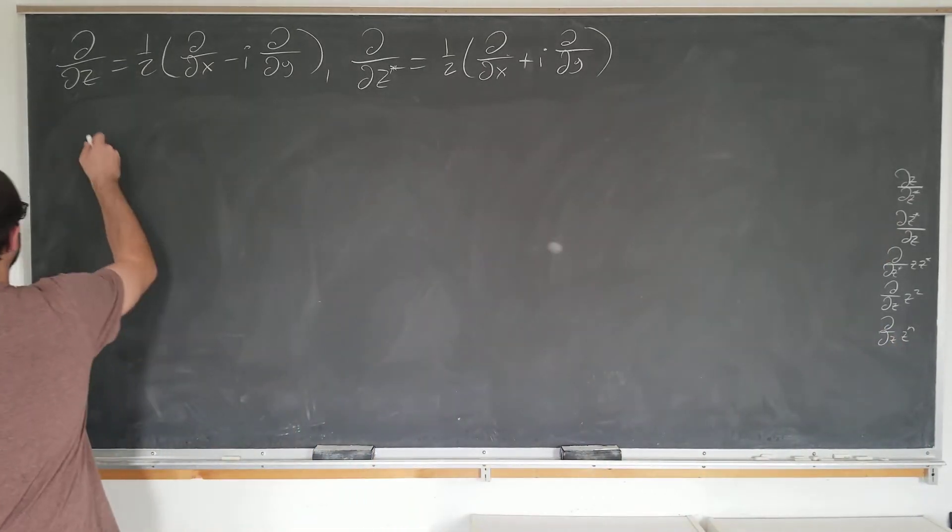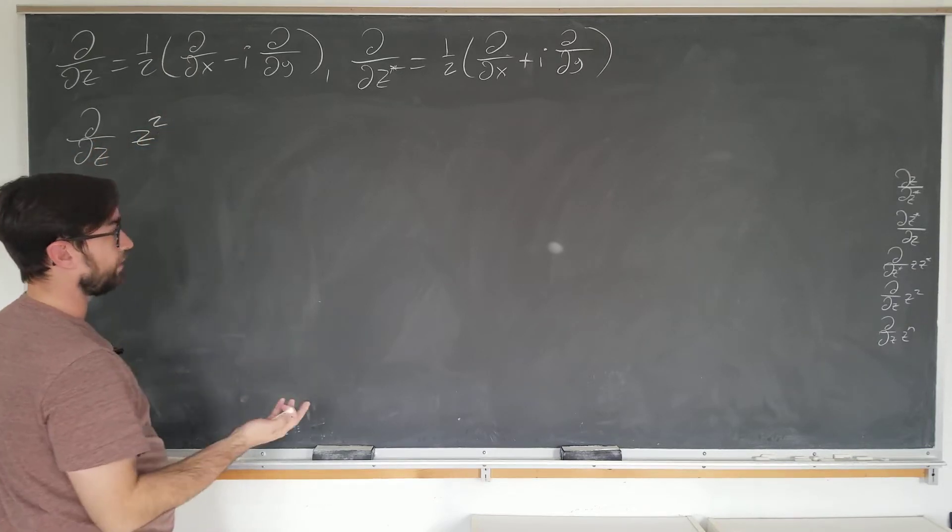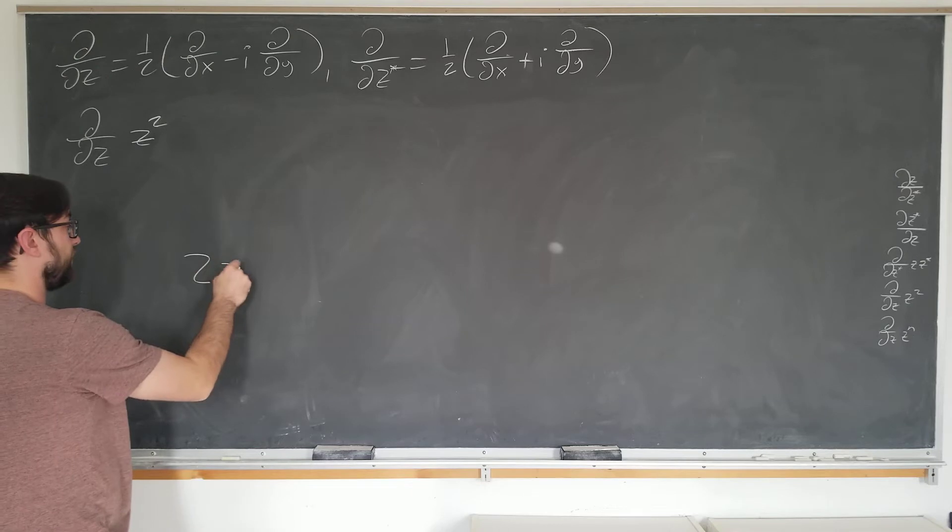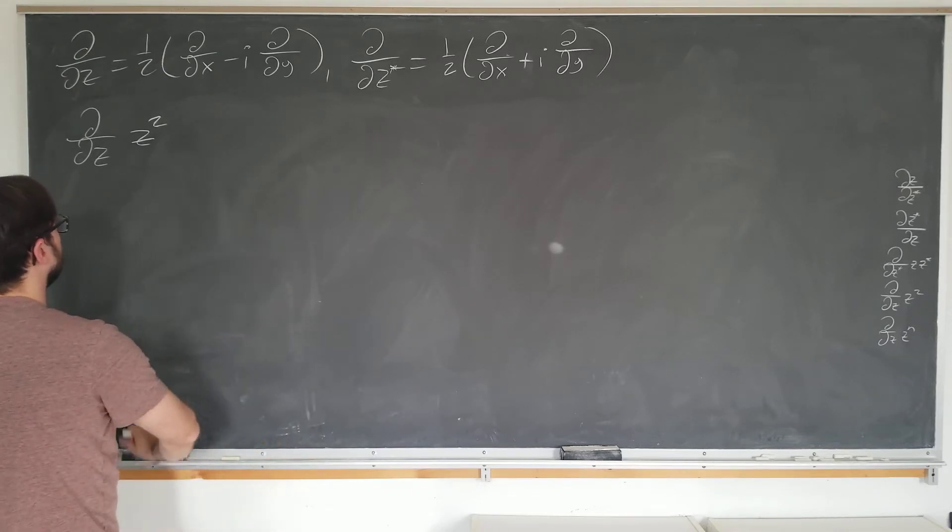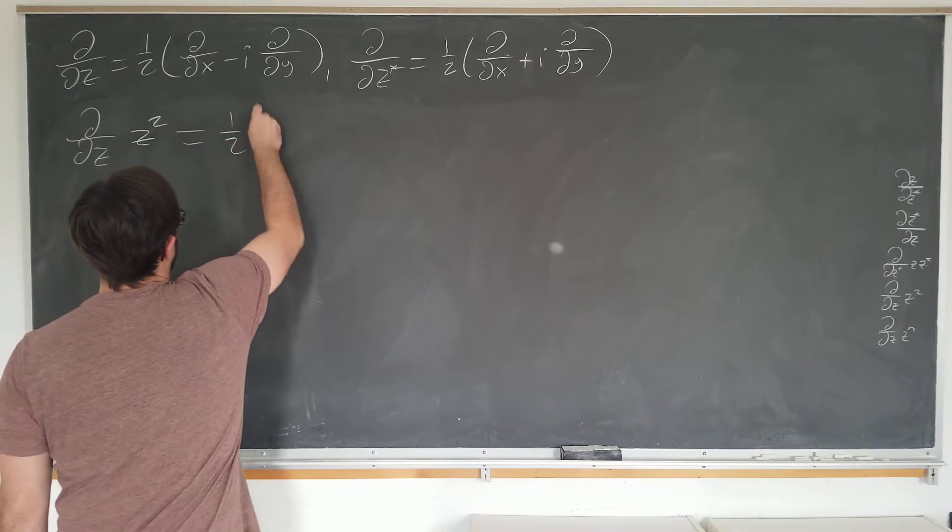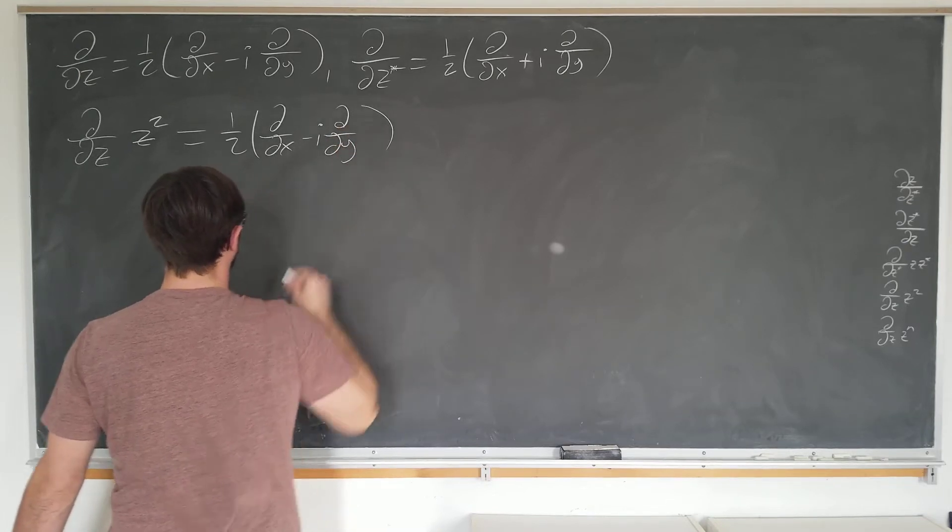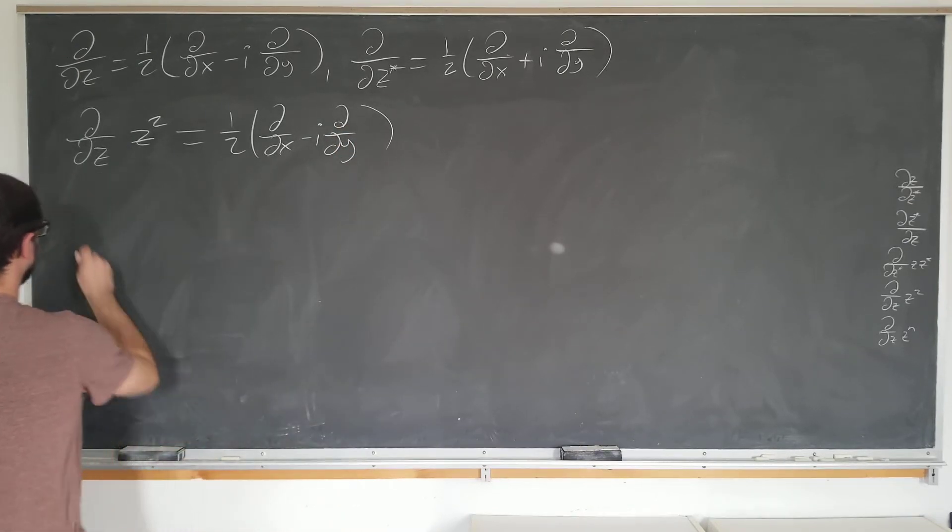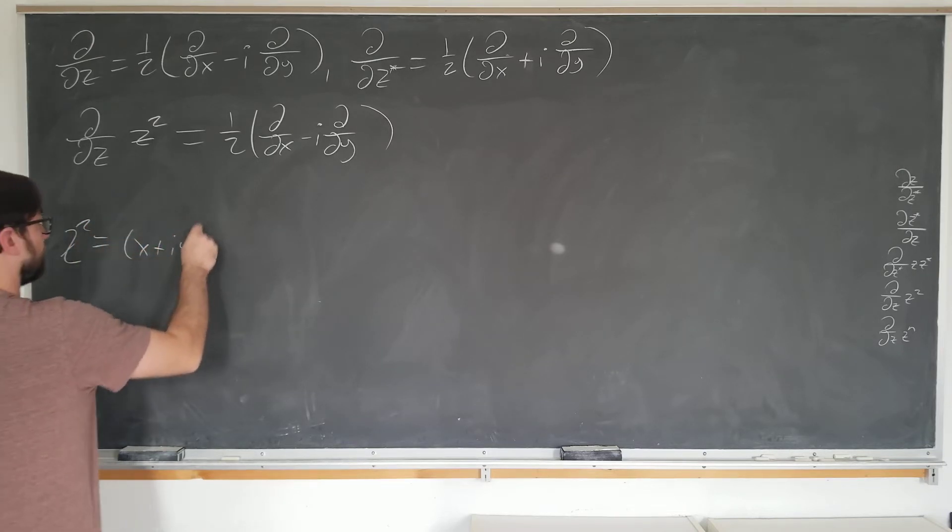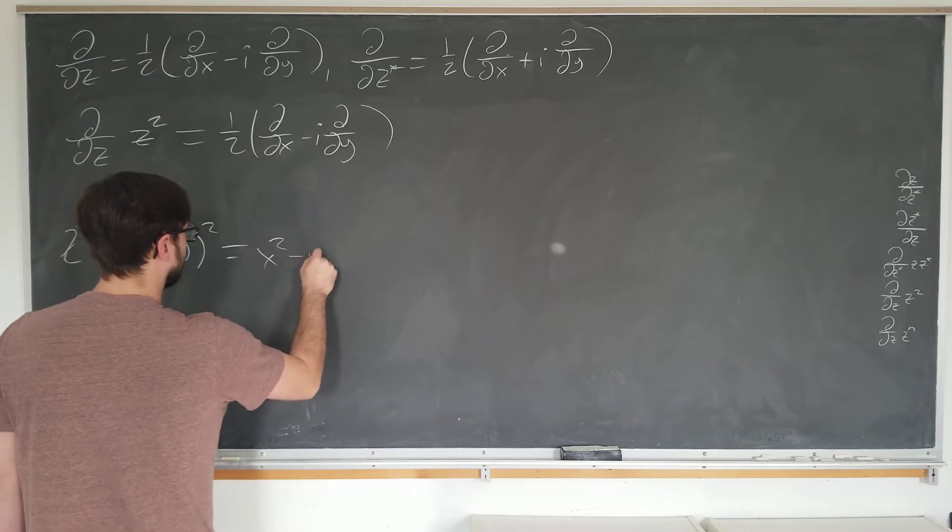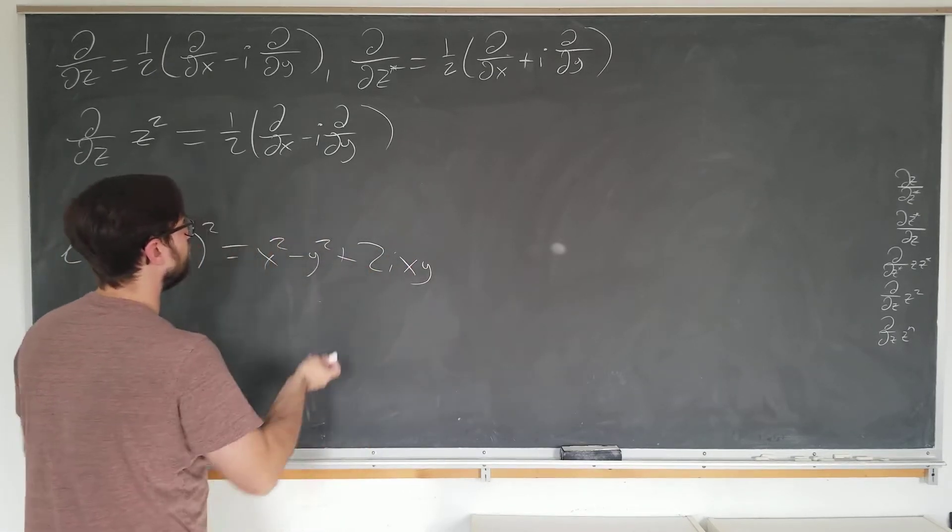We're going to evaluate d by dz of z squared. Hopefully we obtain the result that is 2z from elementary calculus. Let's see if we do. All right, z squared is simply x plus i y squared, which if you foil it out is x squared minus y squared plus 2i xy, which we can simply put here.